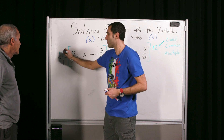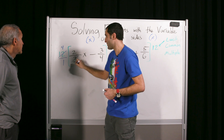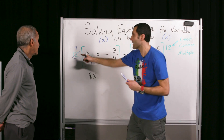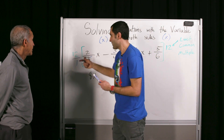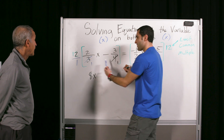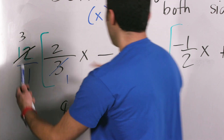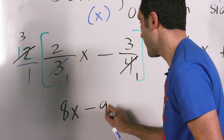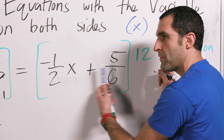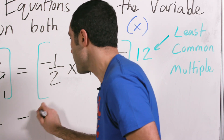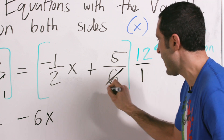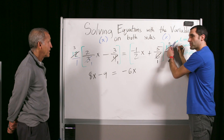12 and 3 cancel — 12 becomes 4. So 4 times 2 makes 8x. Now 12 applying here: 4 goes into itself once, 4 goes into 12 three times. So this becomes negative 9. Equals — what's one half of 12? Negative 6x. And five sixths of 12 is plus 10. So 8x minus 9 equals negative 6x plus 10.